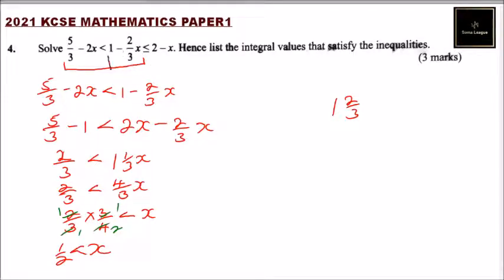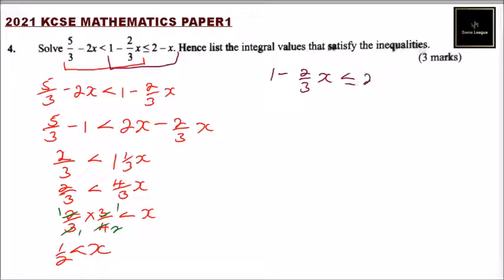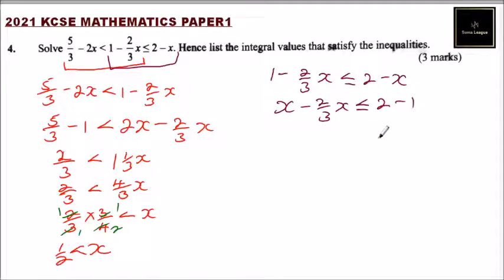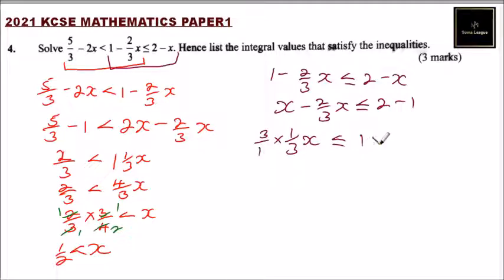Now we work on the second inequality: one minus two over three x is less than or equals to two minus x. Taking x to the left side and one to the right side, we get x minus two over three x less than or equals to two minus one, which gives us one third x is less than or equals to one. Multiplying both sides by three gives x is less than or equals to three.